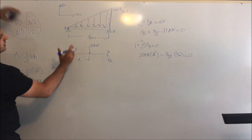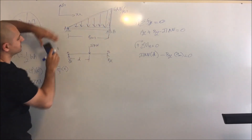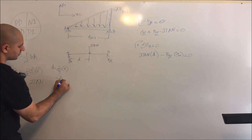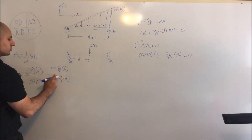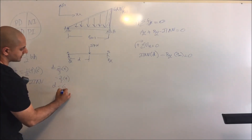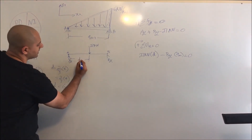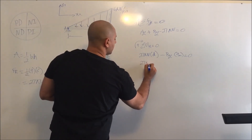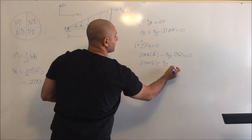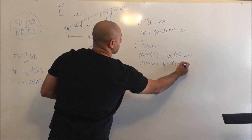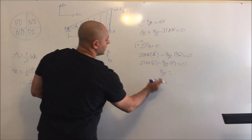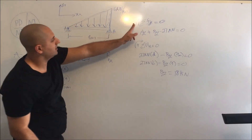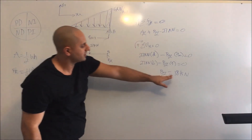In this case, x is the total distance of the distributed load. Since it runs from point A all the way to point B, x equals 9. Solving: two-thirds times 9 equals 6, so d equals 6 meters. Going back into the moment equation: 27 kilonewtons times 6, minus B_Y times 9, equals zero. Solving for B_Y gives us 18 kilonewtons. Since the answer is positive, our free body diagram indicating B_Y pushes up is correct.